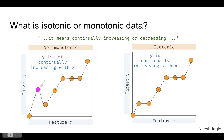As we look at this particular plot on the left-hand side, we see that it is not monotonic because the magenta dot shows an increase, then there is a decrease, and then again an increase. Whereas the plot on the right-hand side shows the isotonic version where, as x is increasing, y increases, stays the same, increases, increases, stays the same, stays the same, and finally again increases.